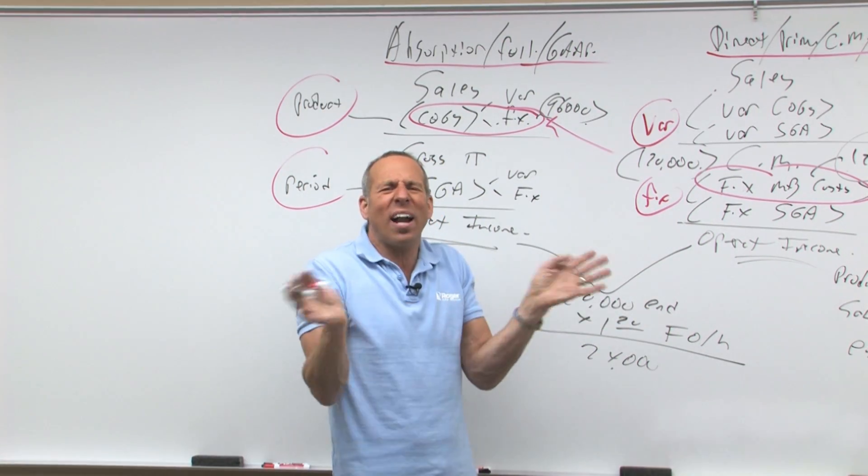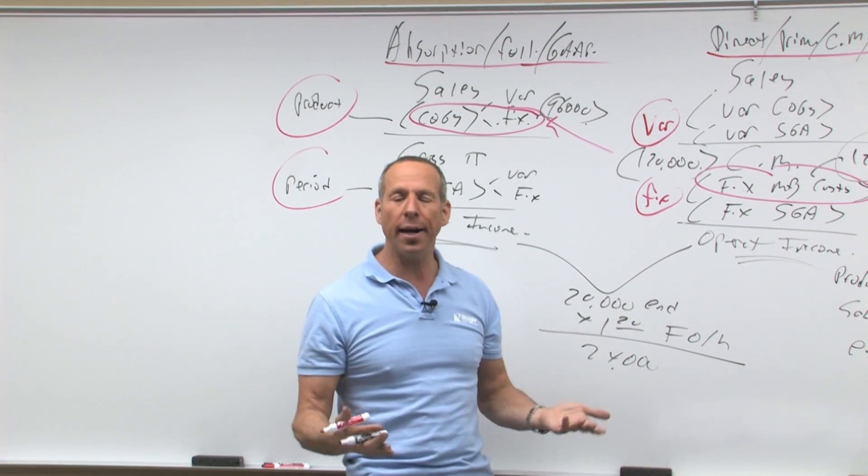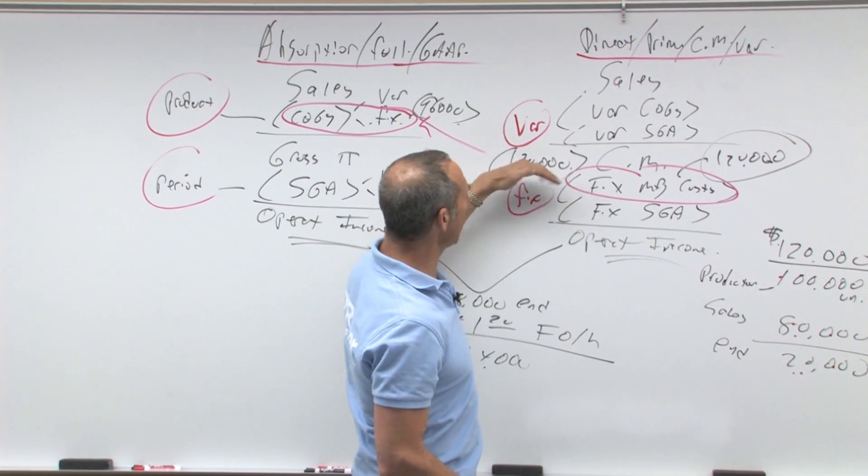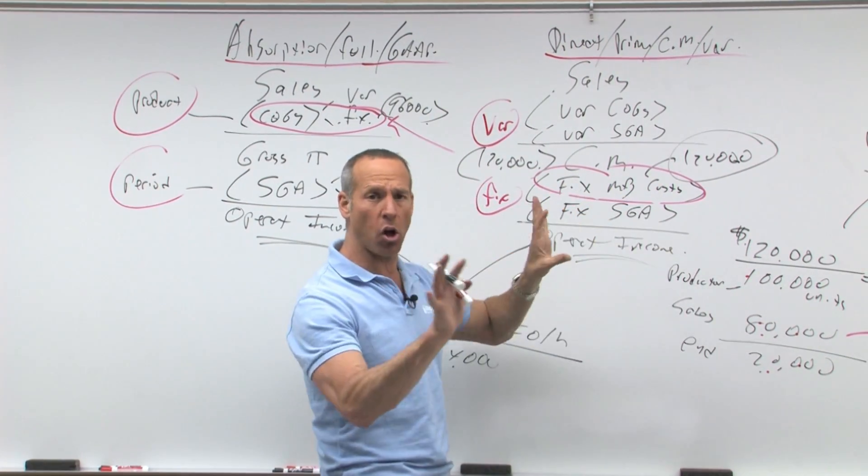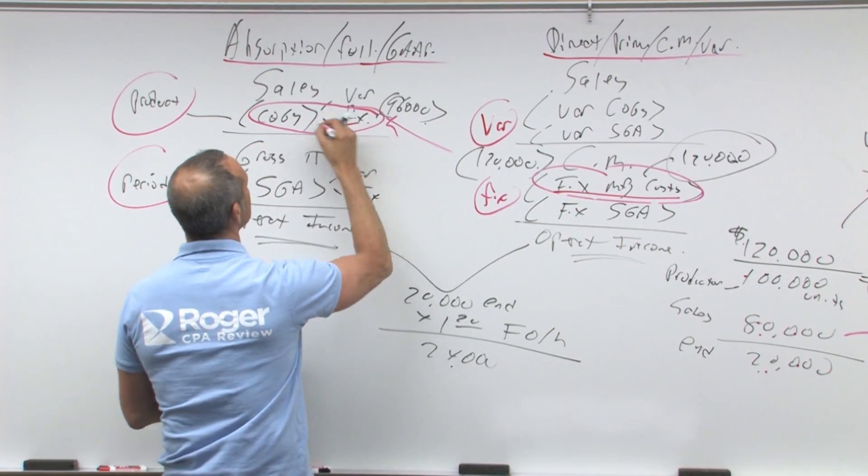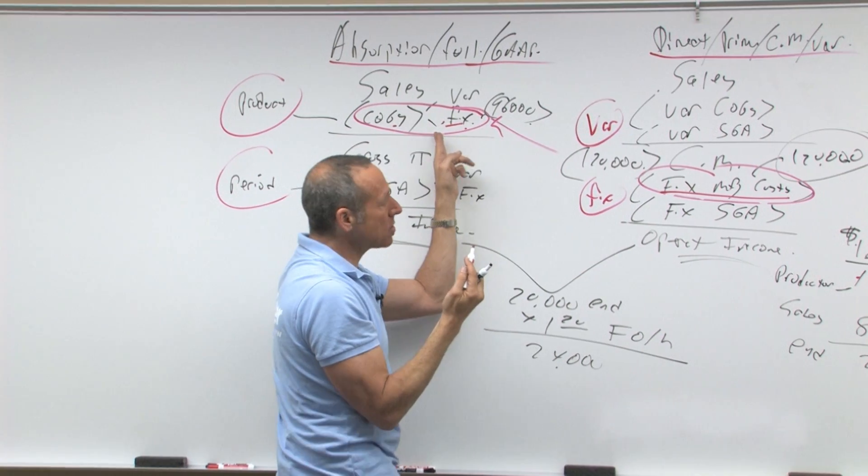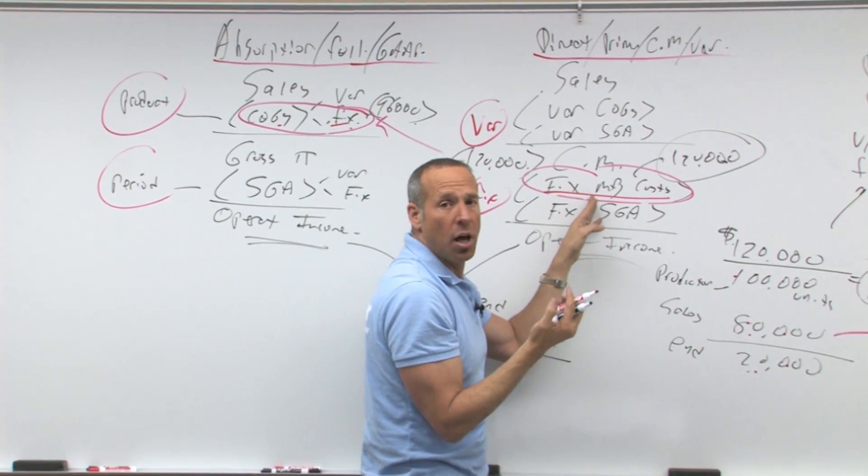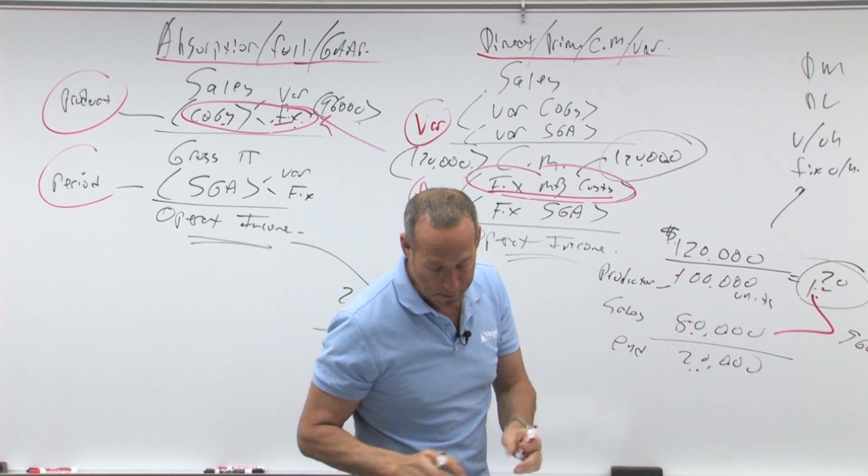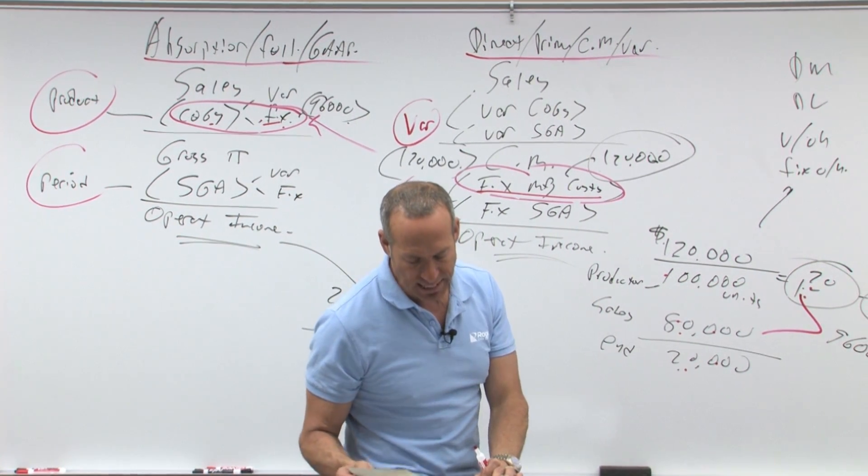Under direct variable prime, they go, I don't really care about this. Why? Because the fixed cost is sunk. I don't care. Expense it. So here, they're going to expense what? All 120 under fixed manufacturing. That's why I called them different. I call this fixed manufacturing cost, and I call this fixed cost of goods sold. Because this is still based on 80,000 units. This is based on all 100 because it's a sunk cost, it's gone, it's done, it's history. So that's what we're basically saying. That's the difference.